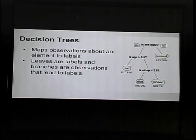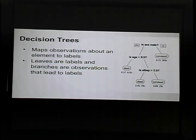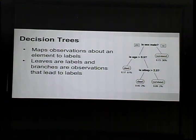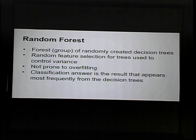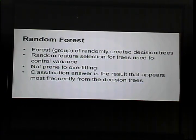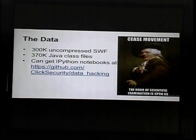Decision trees are a flow-chart-like structure where each node represents a test on your data and each branch is the outcome. A classic example is the Titanic survival dataset. Random forest is the algorithm we used — it's a randomly grouped set of decision trees. We selected it because it's pretty good at controlling variance and not overfitting your data. The classification answer we get is the label that appears most frequently; since I only use two labels, 50% is our threshold — if more than that, that's your label.